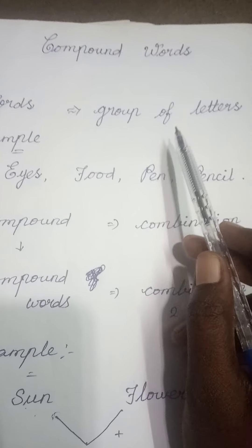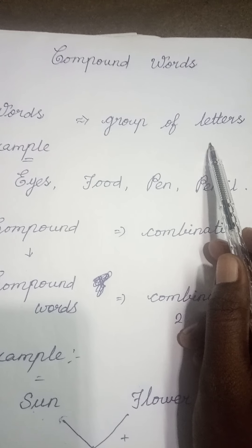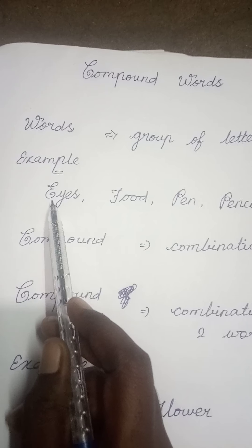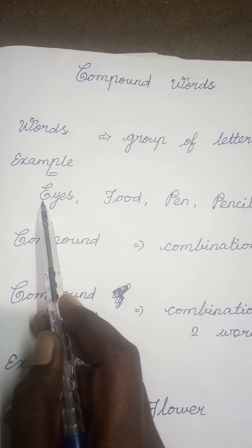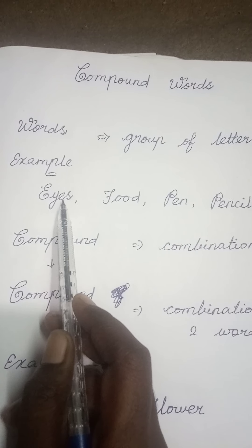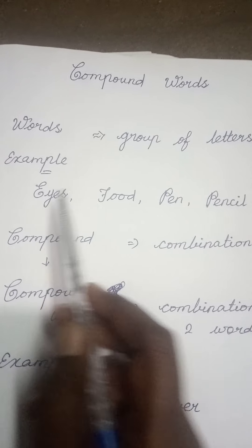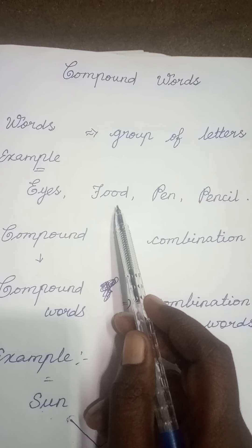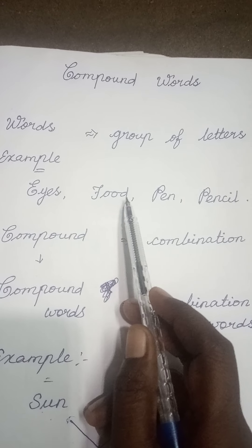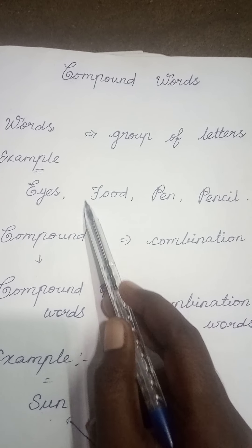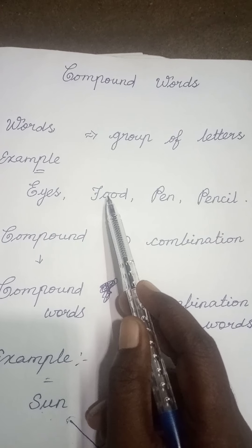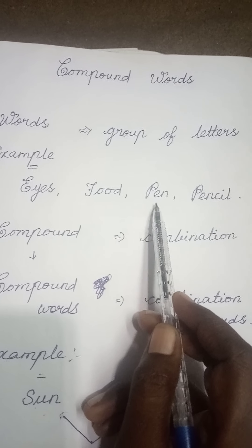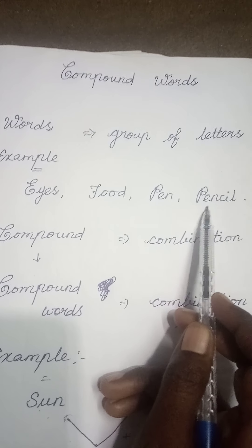Words is nothing, group of letters. For example, you see, eyes. What word is this? Eyes. Here, E-Y-E-S. These four letters make this word eyes. Like the same way, food. F-O-O-D, food. Here also four letters, but these group of four letters make one simple word, food. Then pen, pencil. Do you understand students?